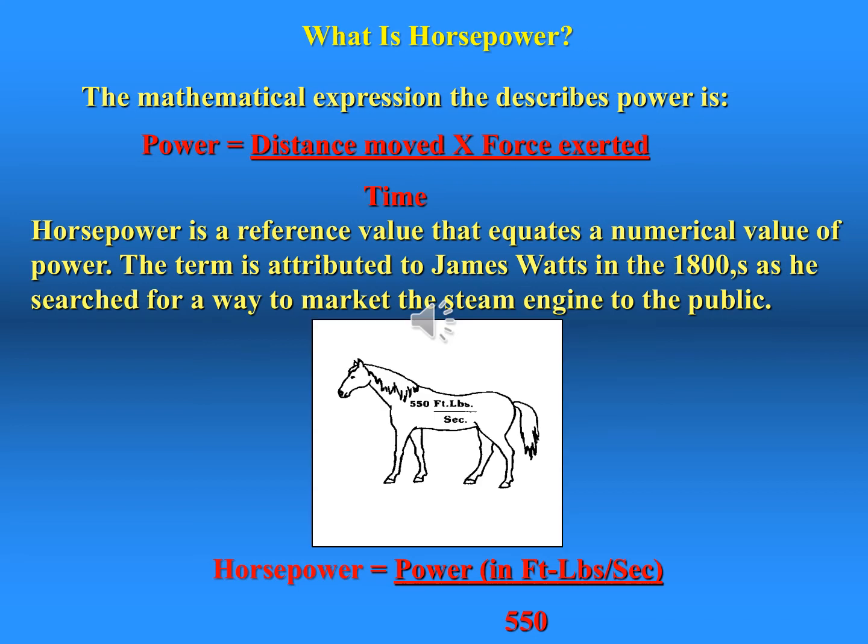One horsepower is the work done at the rate of 550 foot-pounds per second, and it is equivalent to 745.7 watts. Horsepower was first used by James Watt, who employed it to compare the power of the steam engine with that of horses.